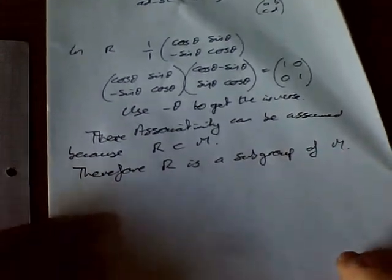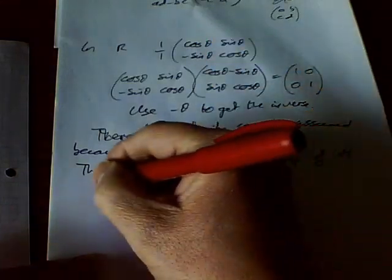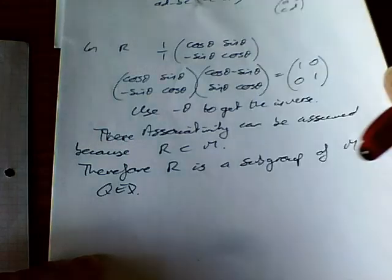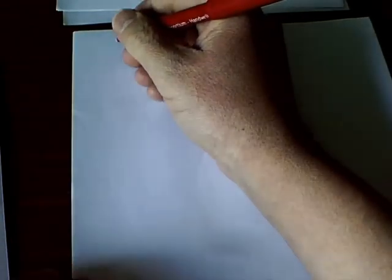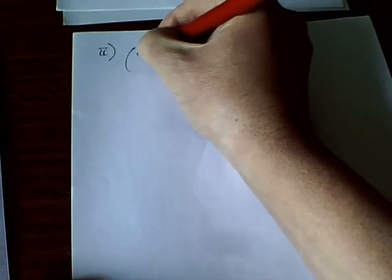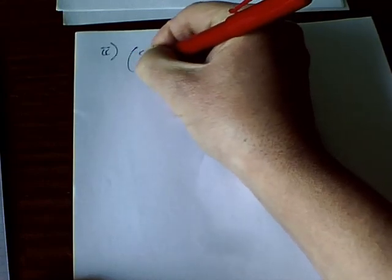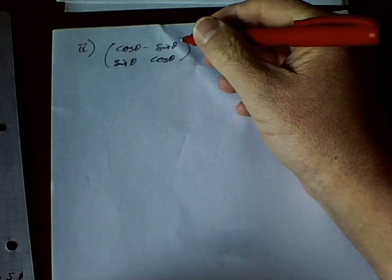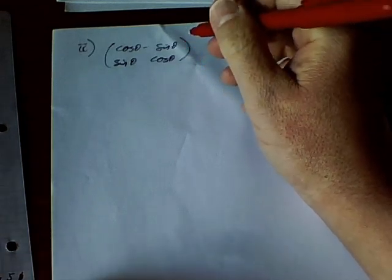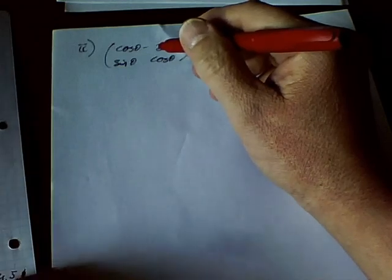The second part of the question asks: by considering geometrical transformations in the xy plane, find a subgroup of R of order 6 and give the elements in exact numerical form. The matrices of the form cos θ, minus sin θ, sin θ, cos θ represent rotations.